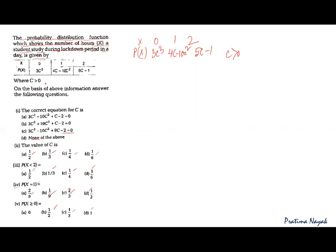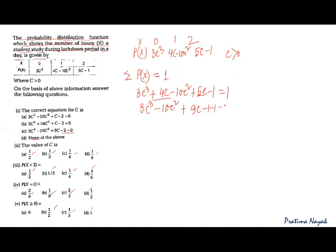As I mentioned, each part has a relation with the next, so every part should be solved carefully. For the first part, the concept to apply is that the summation of probabilities of all values of a random variable is always equal to 1. So whatever is given in the table: 3c³ + (4c − 10c²) + (5c − 1) = 1. Simplifying: 3c³ − 10c² + 9c − 1 − 1, giving us −2.